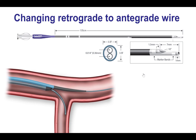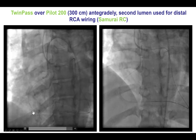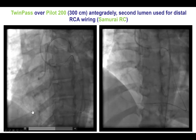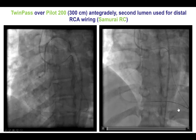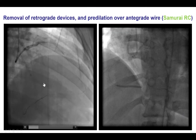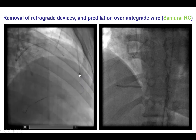We wanted to remove the retrograde gear soon because of tension and straightening of the epicardial collateral. The best way to do this was by using a dual-lumen microcatheter, such as the Twin Pass. The dual-lumen catheter is advanced over the externalized guide wire through the monorail lumen, and then the over-the-wire lumen runs from front to back, allowing advancement of an antegrade guide wire. We advanced the Twin Pass over the retrograde guide wire and were able to advance an antegrade Samurai RC guide wire into the right posterior descending artery. We then removed the retrograde gear and confirmed no injury to the epicardial collateral.